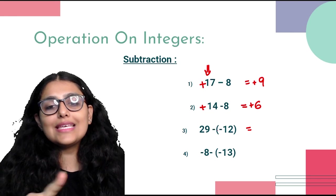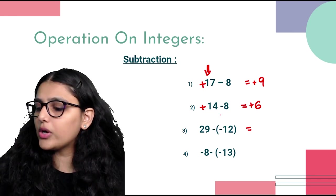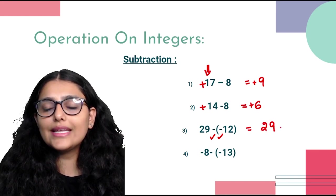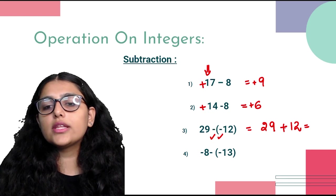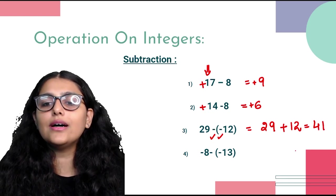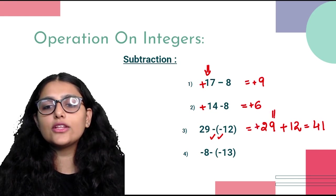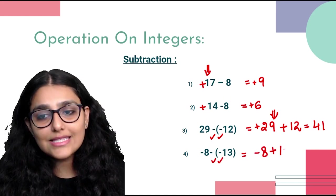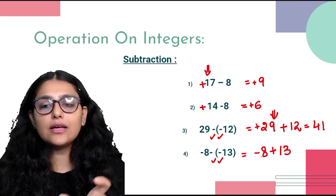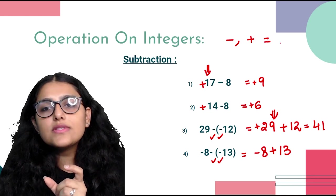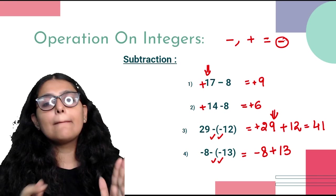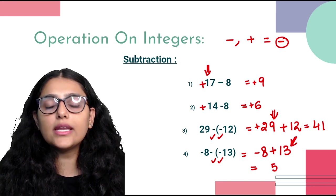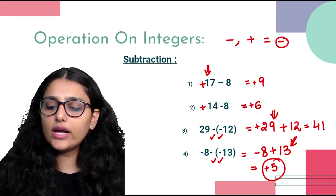For 29 minus negative 12: two negatives make a positive, so the bracket's inner sign changes — minus minus becomes plus 12, giving 29 + 12 = 41, which is positive. For minus 8 minus negative 13: minus minus becomes plus, so minus 8 plus 13. One negative, one positive → subtract: 13 minus 8 = 5, and the larger number 13 has a positive sign, so answer is positive 5.